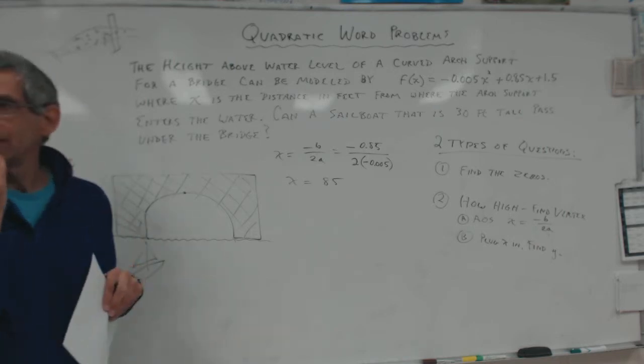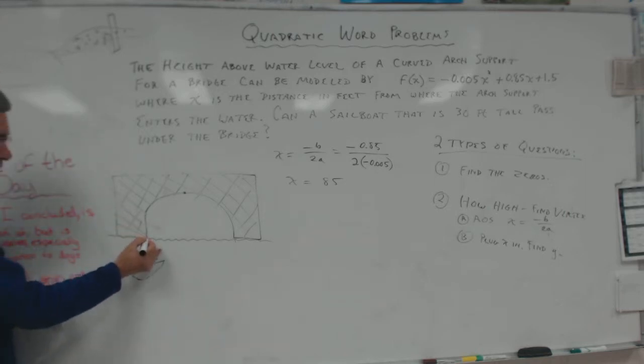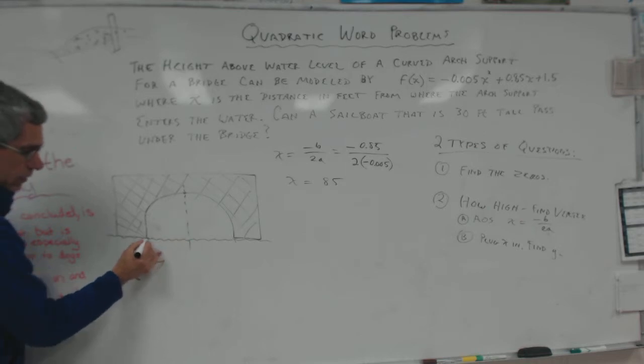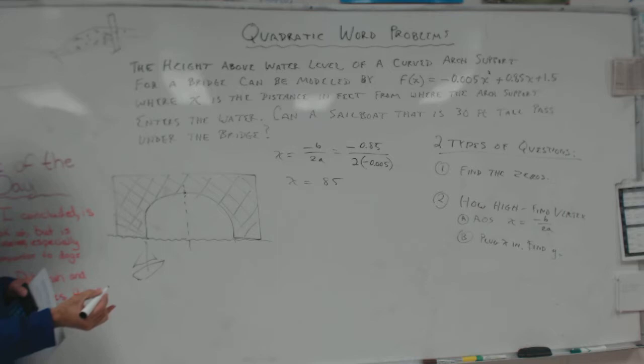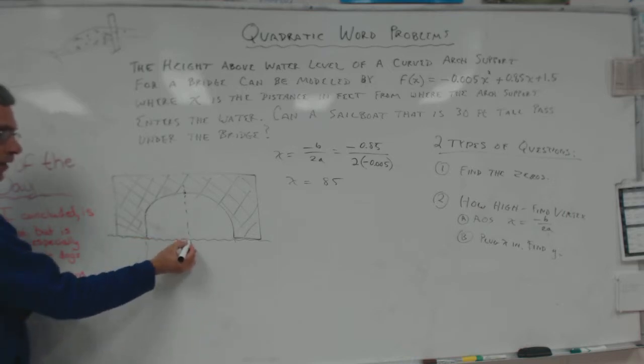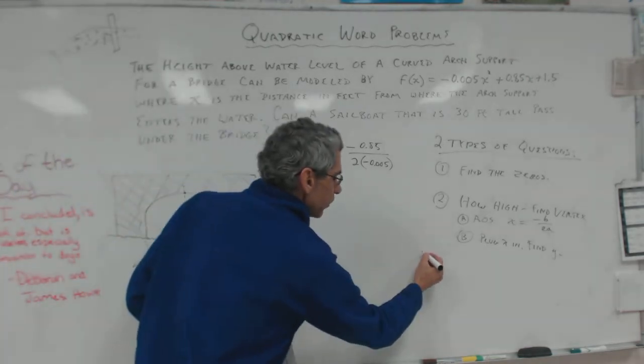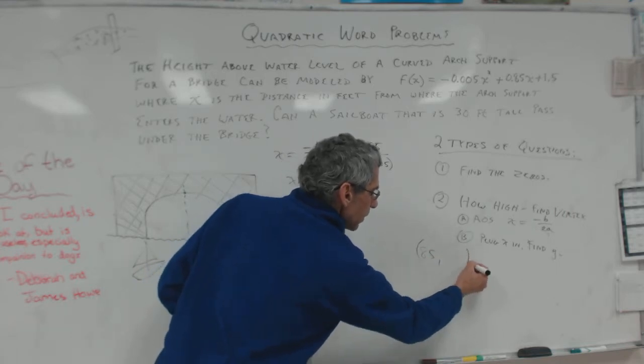All right, so what does that mean? What does that mean? That means from here to here is 85 feet. Does that make sense? That's 85 feet. Is that going to be helpful for me to find my vertex? From here to here is 85 feet. Yeah, that's going to tell me. That's my axis of symmetry. That's my vertex. That's my x of my vertex. 85, comma, something.